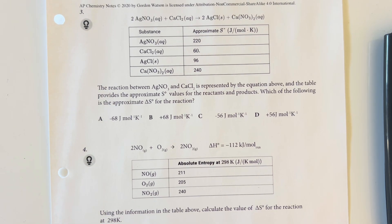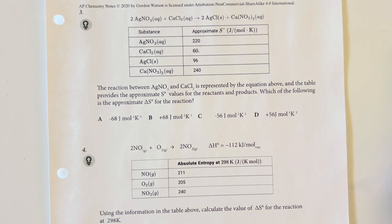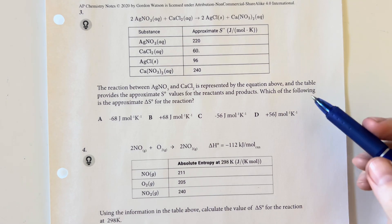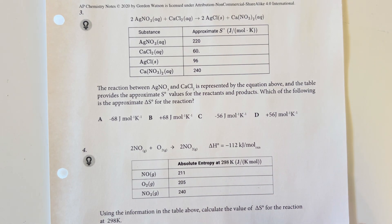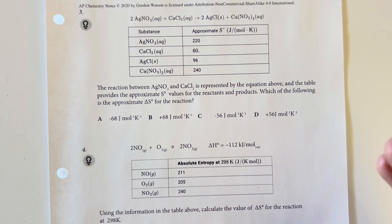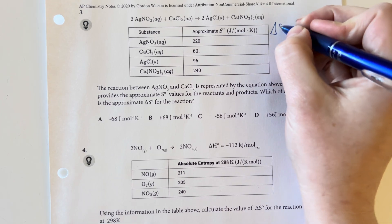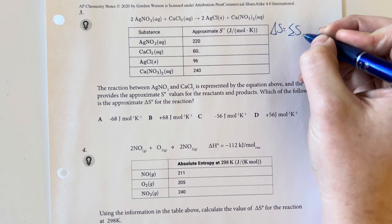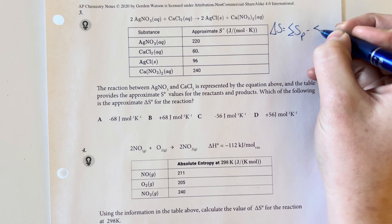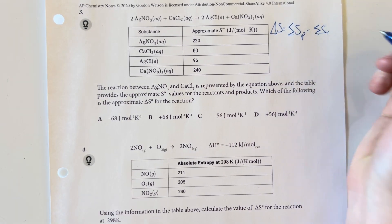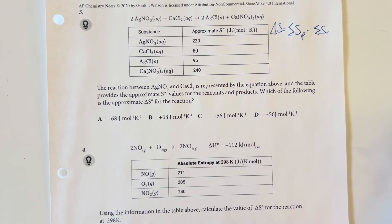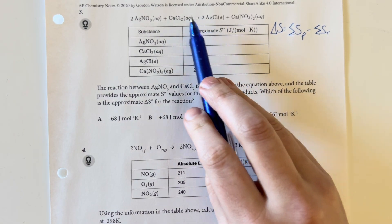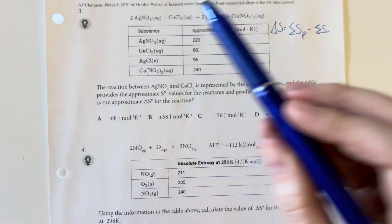The reaction between silver nitrate and calcium chloride is represented in the equation above. The table provides the approximate entropy values for the reactants and products. What is the approximate delta S for the reaction? Again, delta S is equal to the sum of the entropies for our products minus the sum of our entropies for our reactants. We'll need to be careful about all of the coefficients.